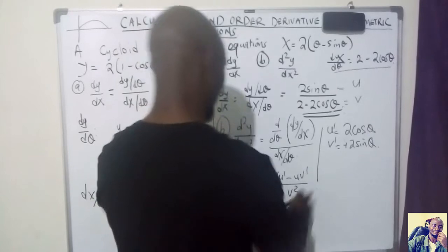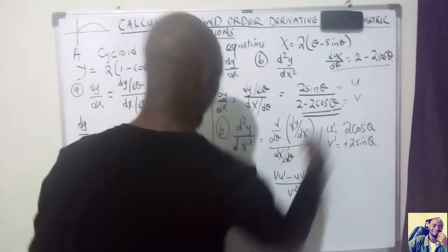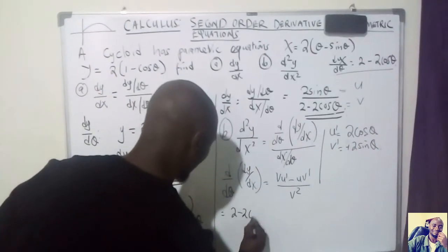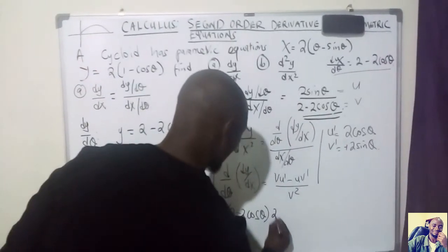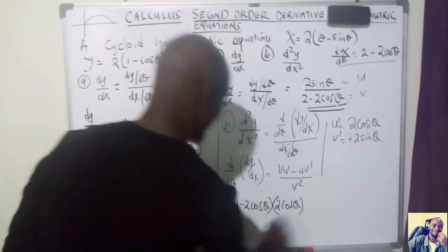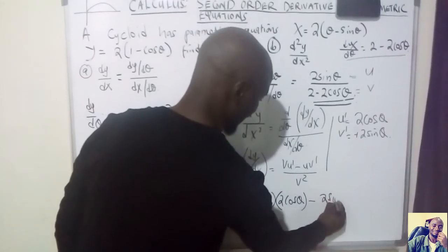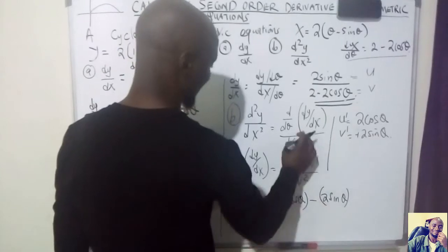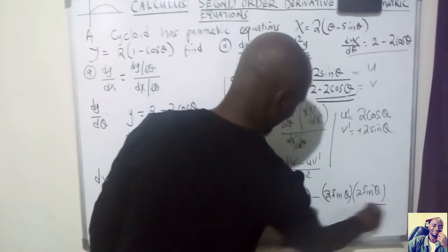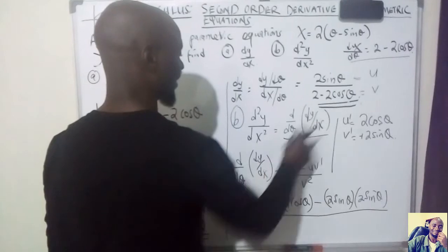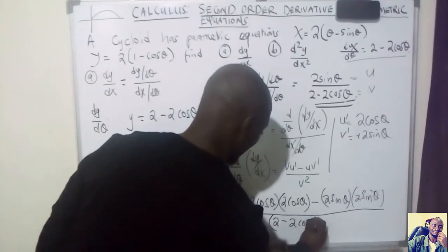Now applying the quotient rule formula v·du minus u·dv over v squared: we have (2 minus 2 cos theta) multiplied by u prime (2 cos theta), minus u (2 sin theta) multiplied by v prime (2 sin theta), all divided by v squared, which is (2 minus 2 cos theta) squared.